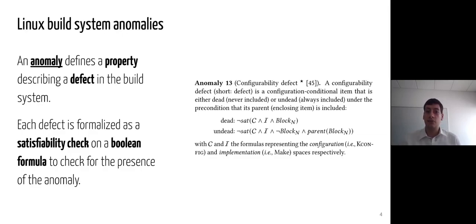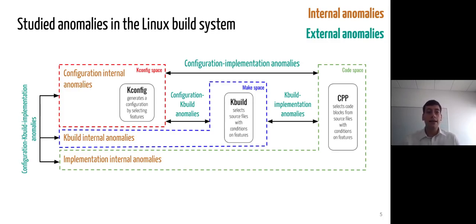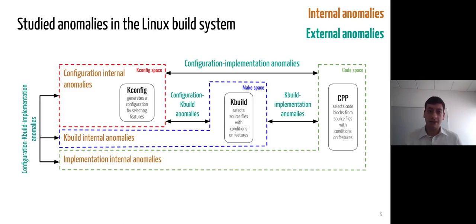Studies on these anomalies describe them by providing an informal definition along with a satisfiability formula, allowing formally to check if the anomaly is present in the build system. The definition on the right is extracted from the state-of-the-art and presents two defects, called dead and undead, expressing that some part of the code is never or always selected, and provides a formal boolean representation. These anomalies are divided in two categories: internal anomalies due to conflicts inside the space, and external anomalies due to conflicts between two or three spaces. As these anomalies can lead to broken kernel variants, they have been tackled by the scientific community.